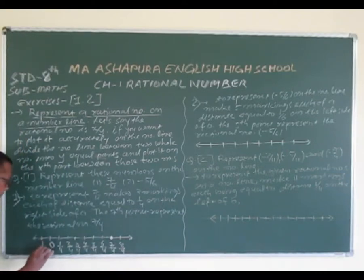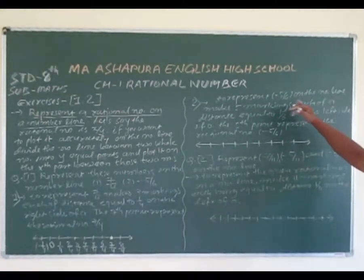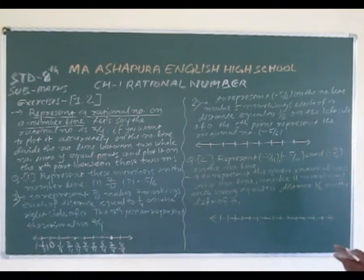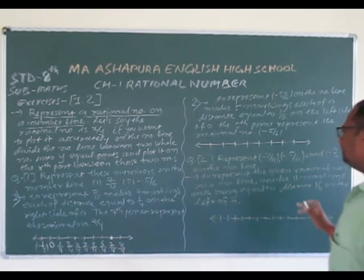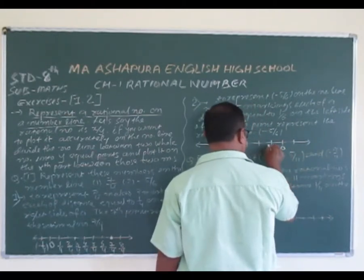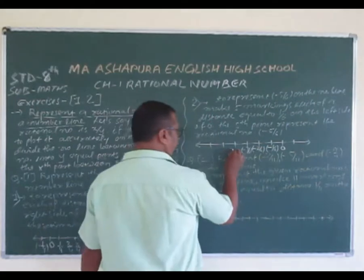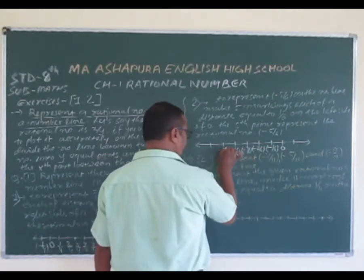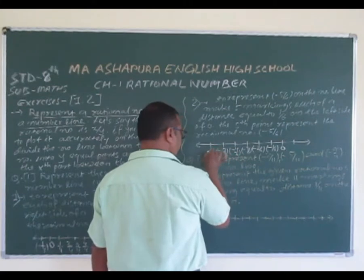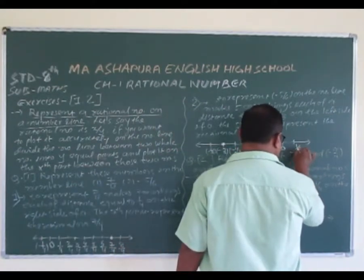This is the left side of 0 — this is negative. To represent minus 5 by 6 on the number line, make 5 markings each of distance equal to 1 by 6 on the left side of 0. So we have: minus 1 by 6, minus 2 by 6, minus 3 by 6, minus 4 by 6, minus 5 by 6, and minus 6 by 6.